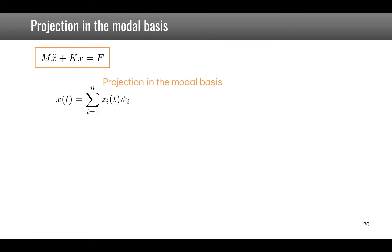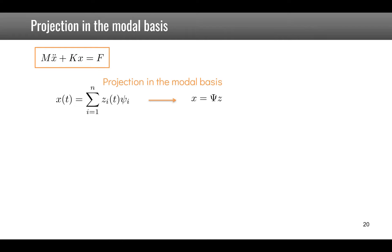Mode shapes are physically meaningful and mathematically useful. The projection onto the modal basis consists of writing x(t) as a sum over mode shapes of modal amplitudes z_i(t) times the mode shapes psi_i. In matrix notation: x = Psi · z. Substituting into the equation of motion and pre-multiplying by Psi-transpose gives a new expression.